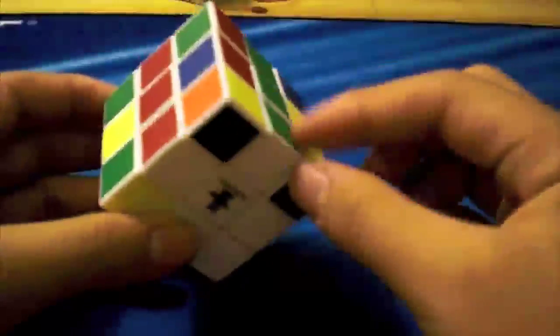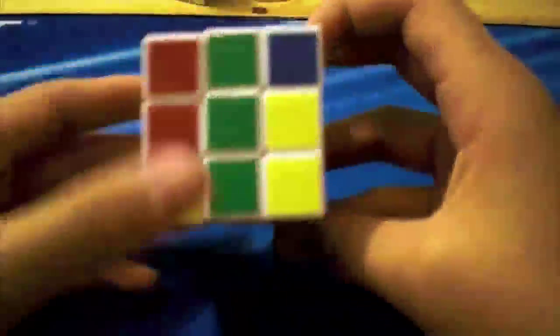So first what you want to do is build a 2x2x2 block in any corner, or if you only solve from white, in one of these four corners. And the 2x2x2 block will look something like this. And then after you build the 2x2 block, you just build the rest of the two edge cross pieces around it, and then you have the extended cross.